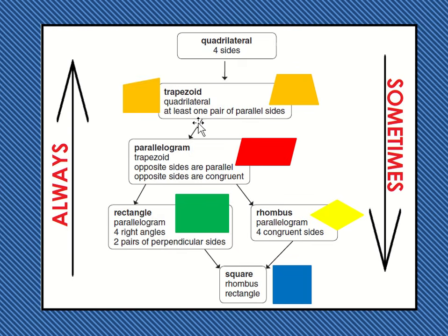Key words here are 'at least,' because sometimes it has more than one pair of parallel sides. I'm going to underline 'at least' because that's important. These guys have parallel sides here — there's one side that is parallel to this one; they will never touch. So this is a trapezoid. And this right here has parallel sides here and here. The top and bottom are not parallel because it's going up at an angle at the top. So these are trapezoids.